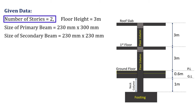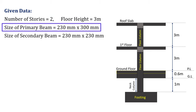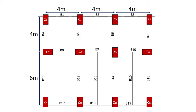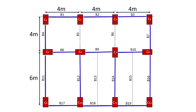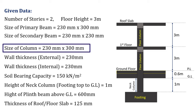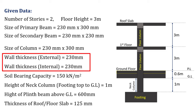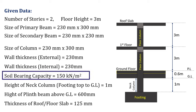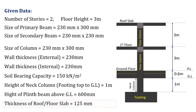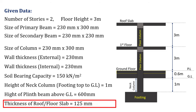We have the given data: number of stories is 2, floor height is 3 meters, size of primary beam is 230×300 mm, and size of secondary beam is 230×230 mm. Primary beams are connected by columns at both ends; secondary beams are connected by walls or primary beams at least at one end. Size of column is 230×300 mm, wall thickness is 230 mm for both external and internal walls, soil bearing capacity is 150 kN/m², height of neck column is 1 meter, height of plinth beam above ground is 600 mm, and thickness of both roof and floor slab is 125 mm.